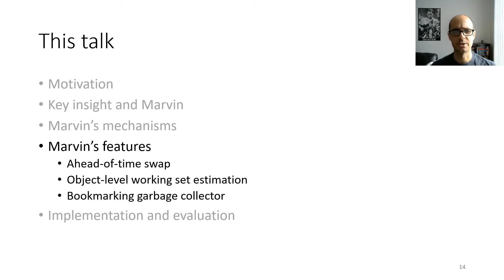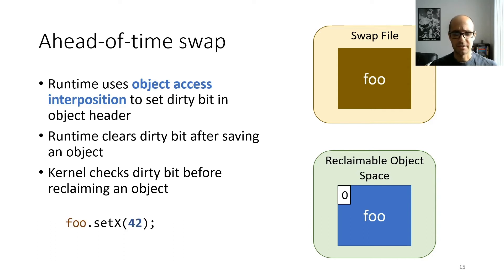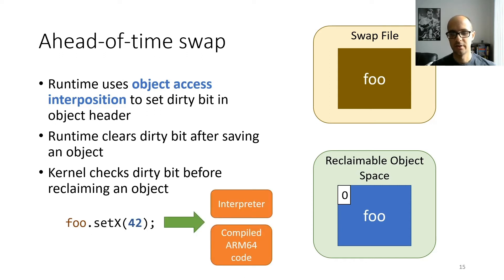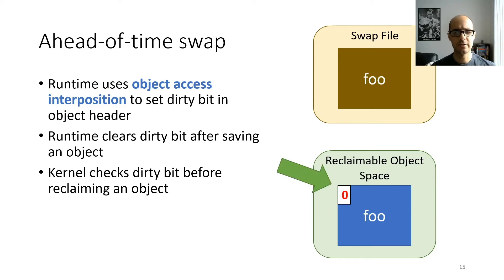For ahead-of-time swap, for every object we maintain a dirty bit in the object header. The runtime uses object access interposition to ensure the dirty bit gets set whenever app code modifies an object — it's 1 if the object's memory footprint differs from its checkpointed image on disk, and 0 if they are the same. If app code modifies an object, both the interpreter and compiled code set that dirty bit. Then in the background, the runtime checkpoints objects to disk and clears the dirty bit after saving. When the kernel wants to reclaim an object, it checks the dirty bit and only reclaims if it's cleared.